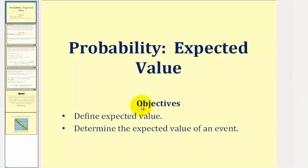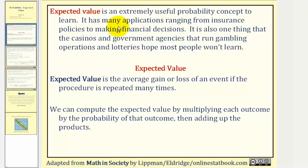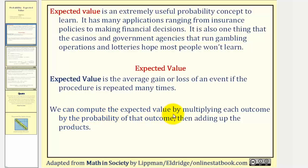Welcome to a lesson on expected value. In this lesson we will define expected value and also determine the expected value of an event. Expected value is an extremely useful probability concept to learn. It has many applications ranging from insurance policies to making financial decisions. It is also one thing that casinos and government agencies that run gambling operations and lotteries hope most people won't learn. Expected value is the average gain or loss of an event if the procedure is repeated many times. We can compute the expected value by multiplying each outcome by the probability of that outcome, then adding up the products.